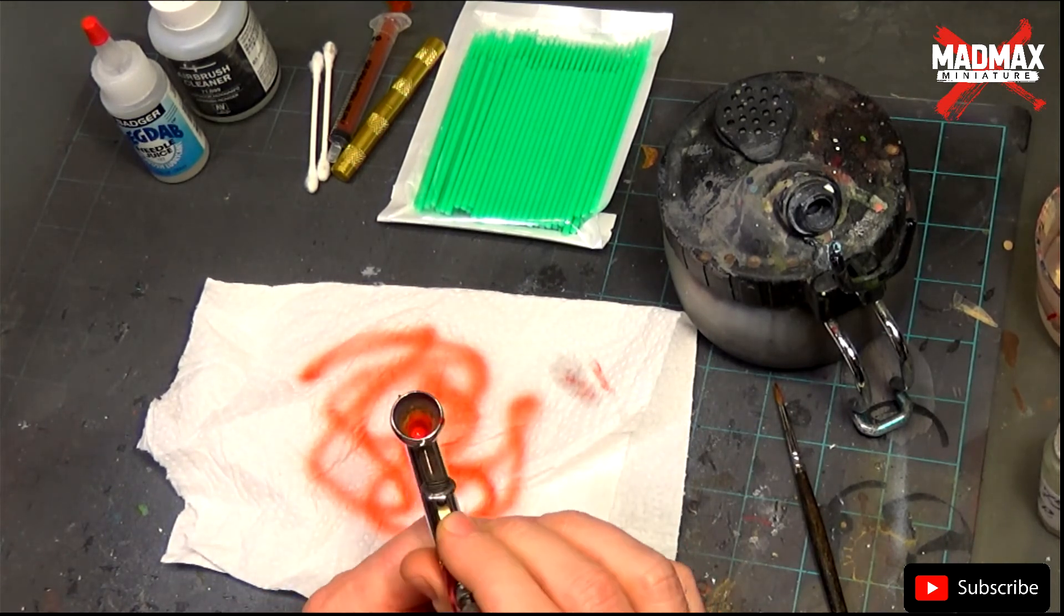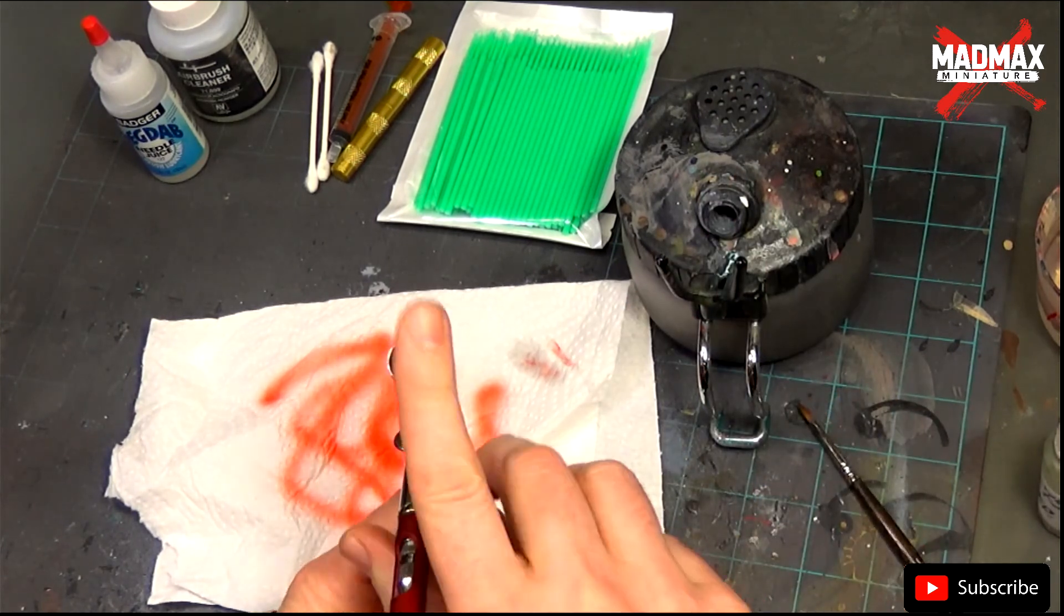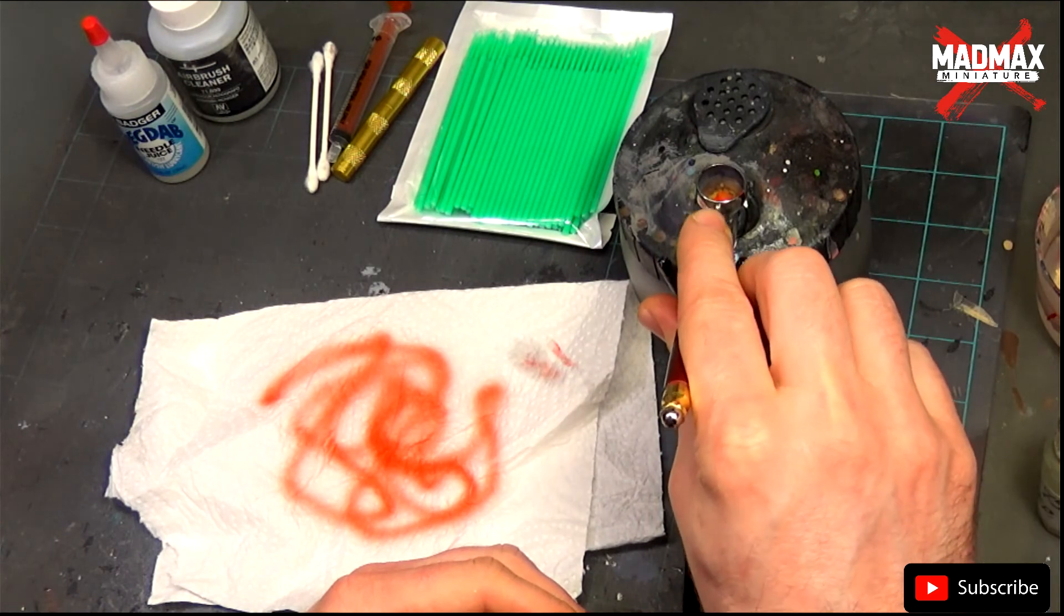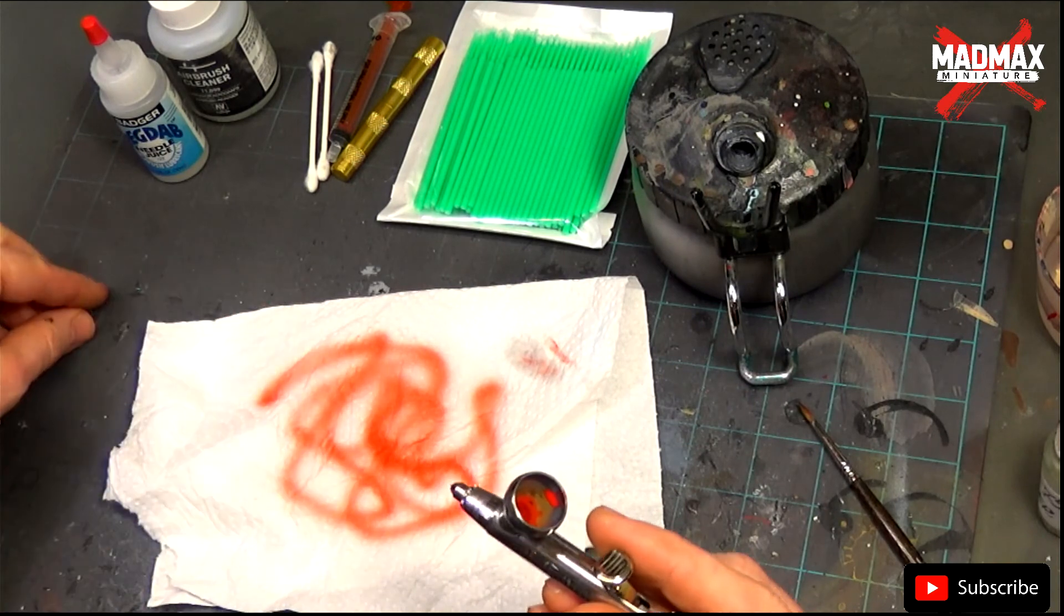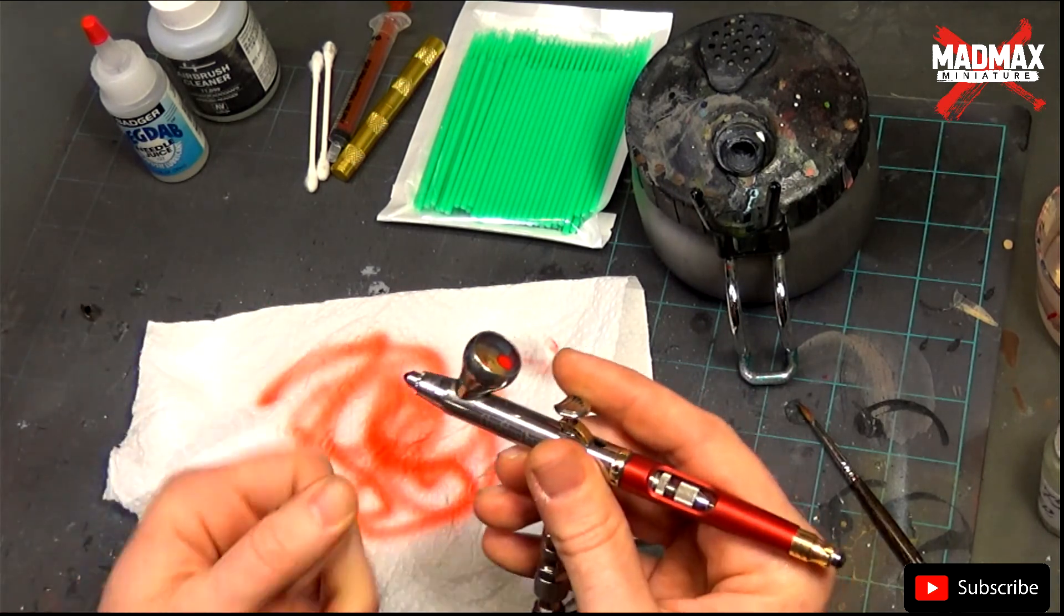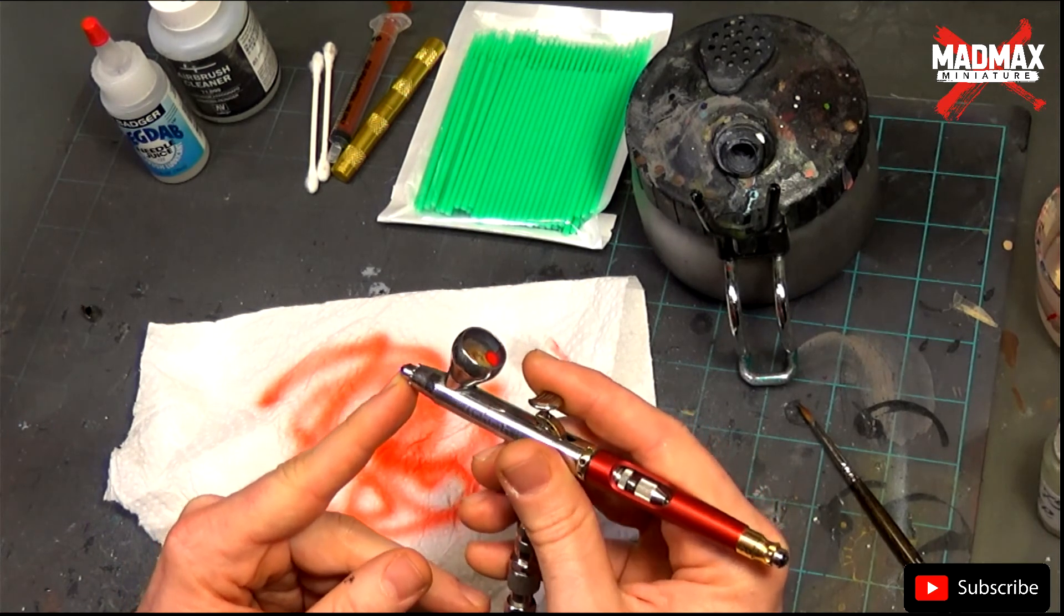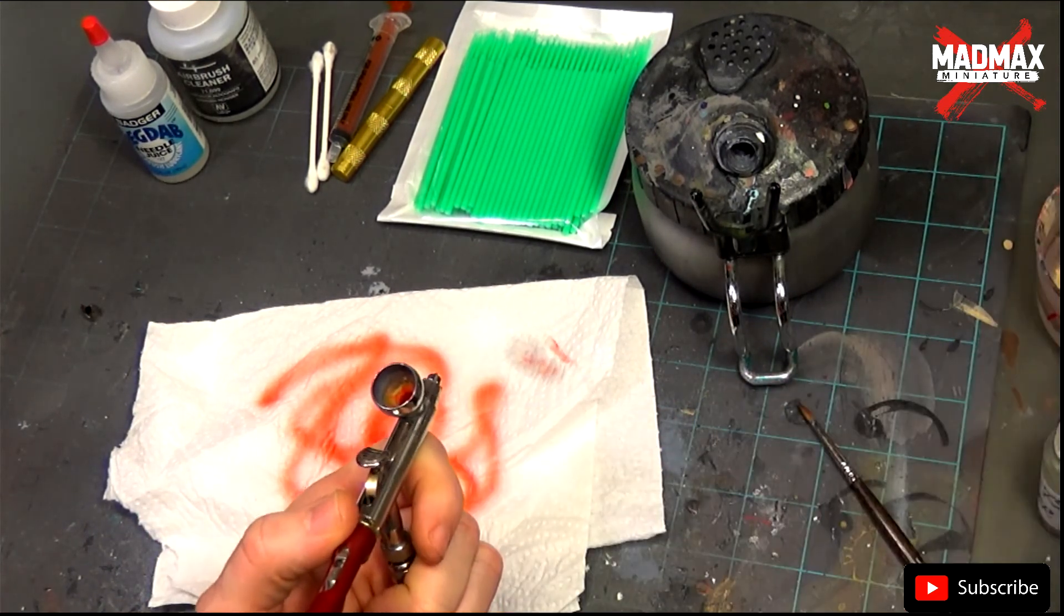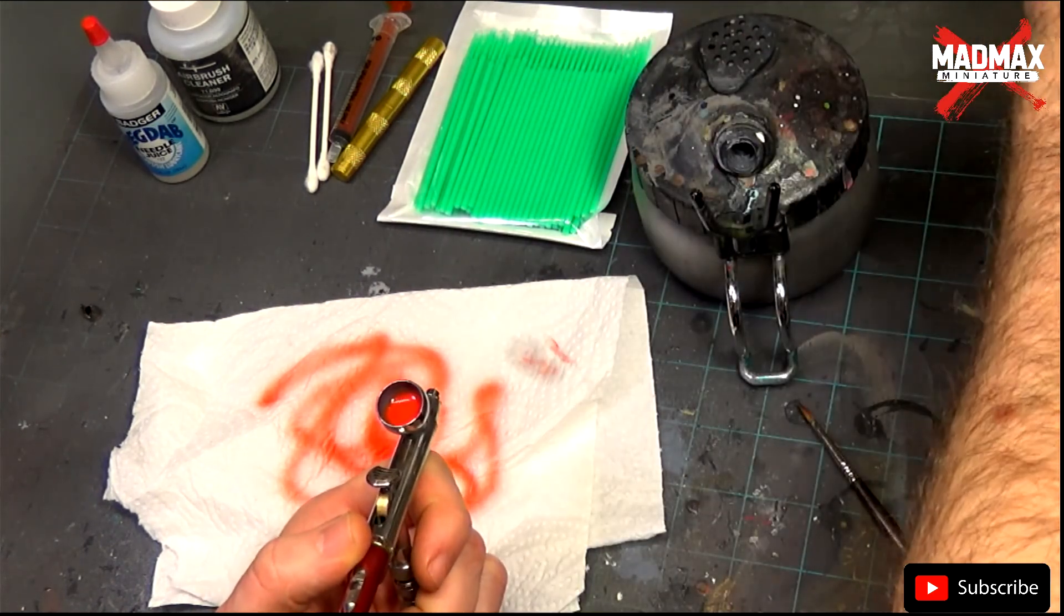Once you are done, there is one thing that you should never ever do: spraying all the excess paint through the airbrush. This way, you will clog your airbrush way faster. To avoid this, just drop water in your cup, clean it with the old brush you used earlier and take out the water with a pipette and put it in the waste pot.